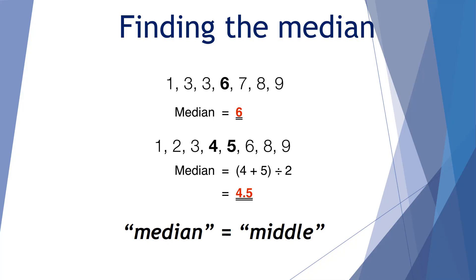Welcome once again mathematicians. In today's video we'll be looking at finding the median of a group of numbers. On screen you can see a couple of sets of numbers: the first goes 1, 3, 3, 6, 7, 8, 9 and the median is six; the second set is 1, 2, 3, 4, 5, 6, 8, 9 and the median was 4.5. Median refers to the middle number once our numbers are sequenced from lowest to highest.